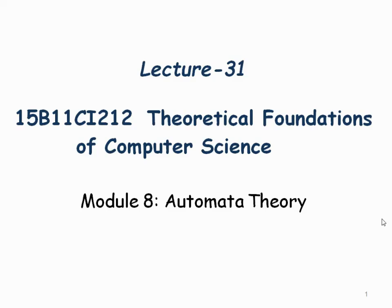Where did automata theory begin? This theory was started by Alan Turing during the Second World War. He is a German scientist, a German mathematician. Based on his mathematical abilities, he developed a machine called the Turing machine — a mathematical machine especially used to break many secrets. During the Second World War, a powerful secret called the Enigma code was developed, which could not be cracked. That Enigma code was broken by Alan Turing using his mathematical model.